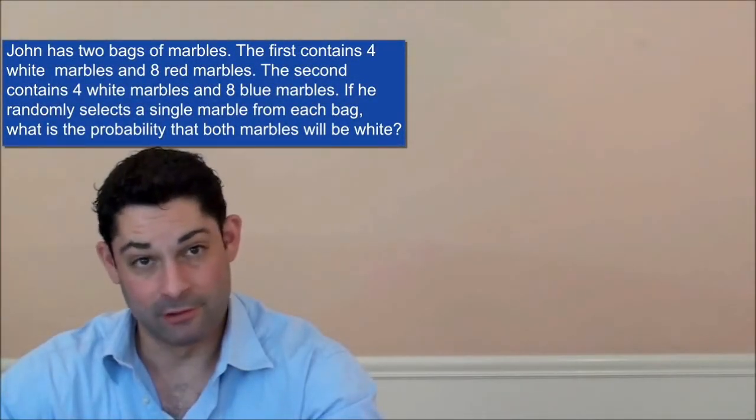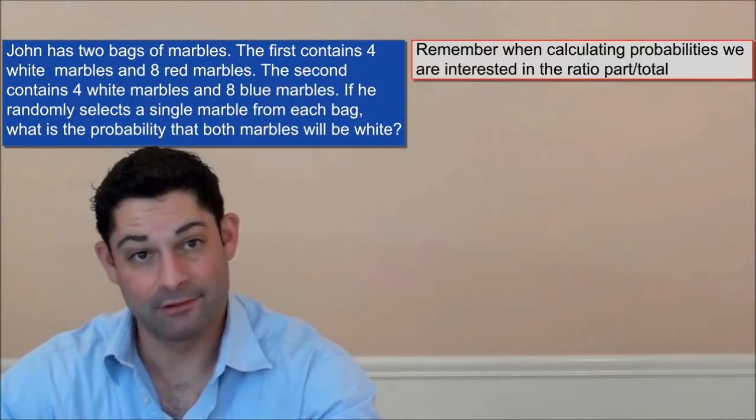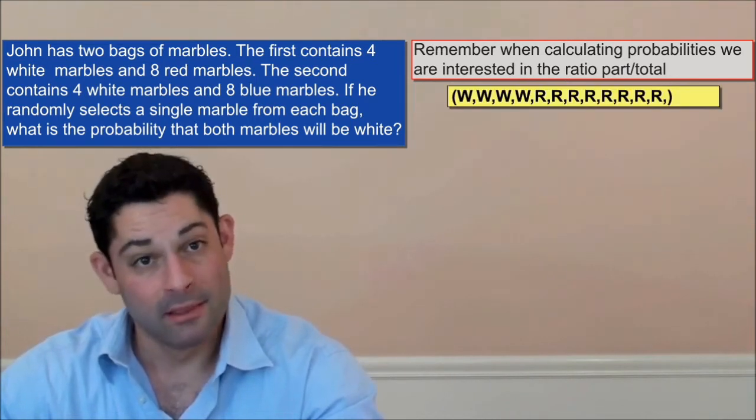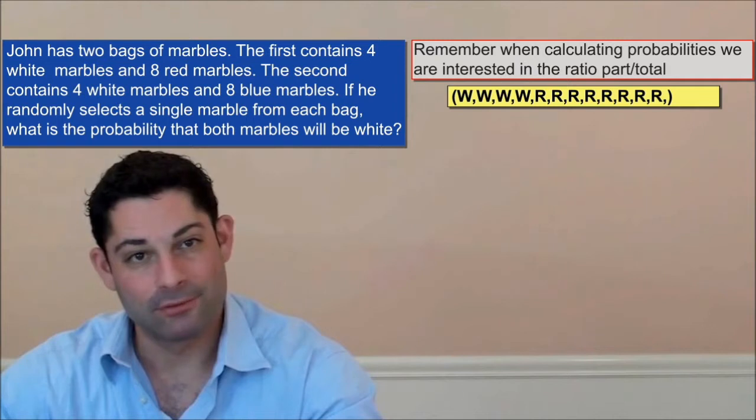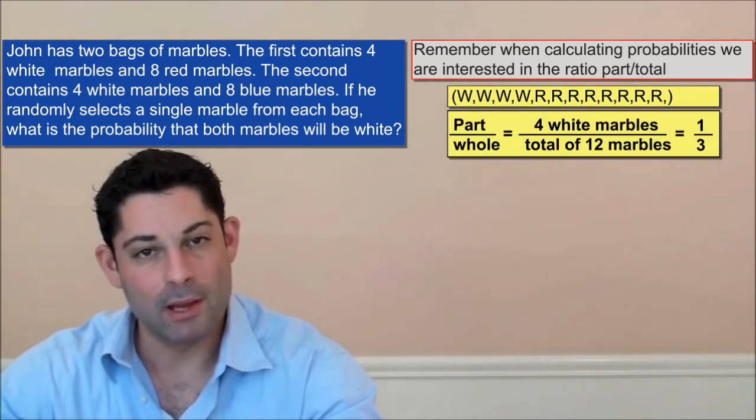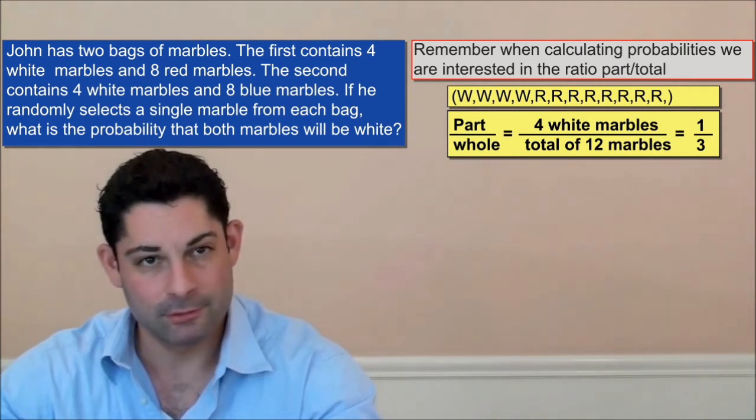The first step is to determine the probability of selecting exactly one marble from each bag. The first bag contains twelve marbles, four of which are white, so the probability of selecting a white marble is equal to the ratio of four-twelfths, reducible to one-third.